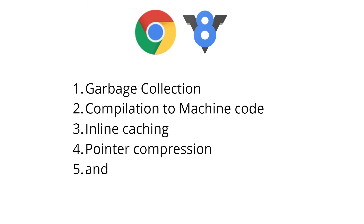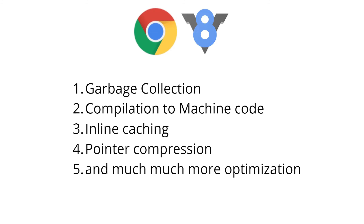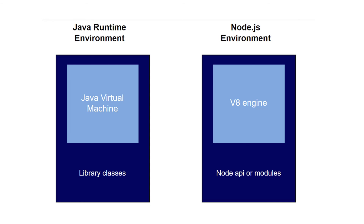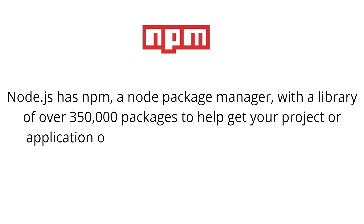One of the major reasons for JavaScript's modern popularity is its V8 engine, which allows modern features like garbage collection, compilation to machine code, inline caching, pointer comparison, and many more optimizations. For better understanding, comparing Node.js with Java: Java code is first compiled into bytecode and then interpreted by the Java Virtual Machine. In JavaScript, Node.js is the environment and the V8 engine acts as the virtual machine, with Node APIs and modules automatically embedded so the engine understands library code automatically.